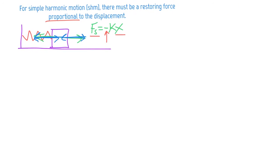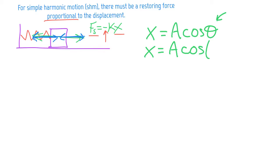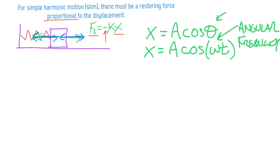We know the equation is going to look like x equals amplitude cosine θ. But cosine θ only works if the function repeats every 2π. Since that may not match our system, we write x = A cosine(ωt), where ω is the angular frequency and ωt gives the angle traversed at a given time.